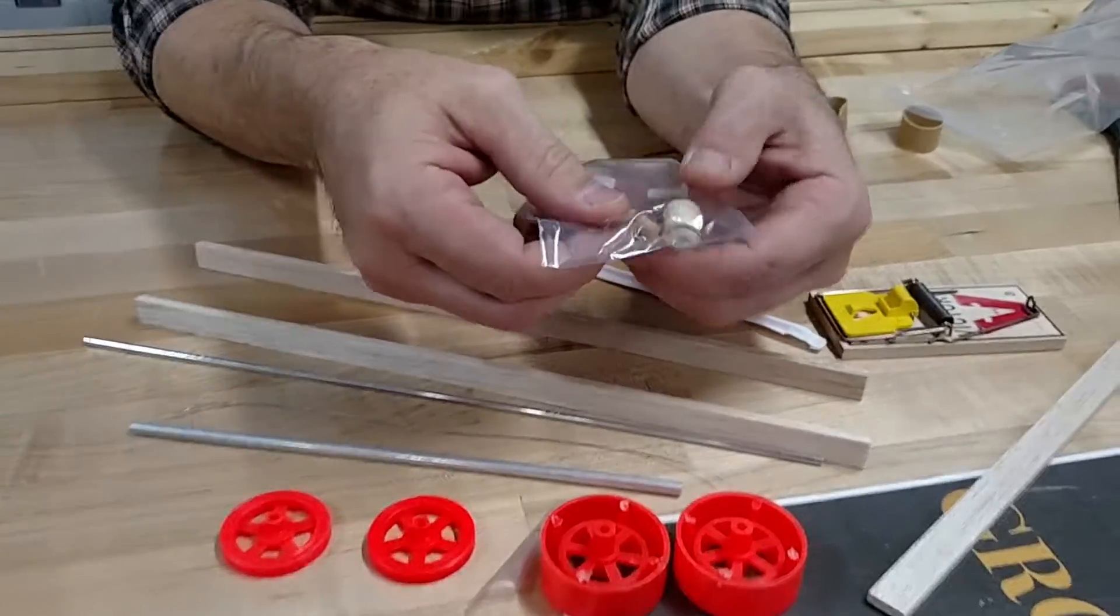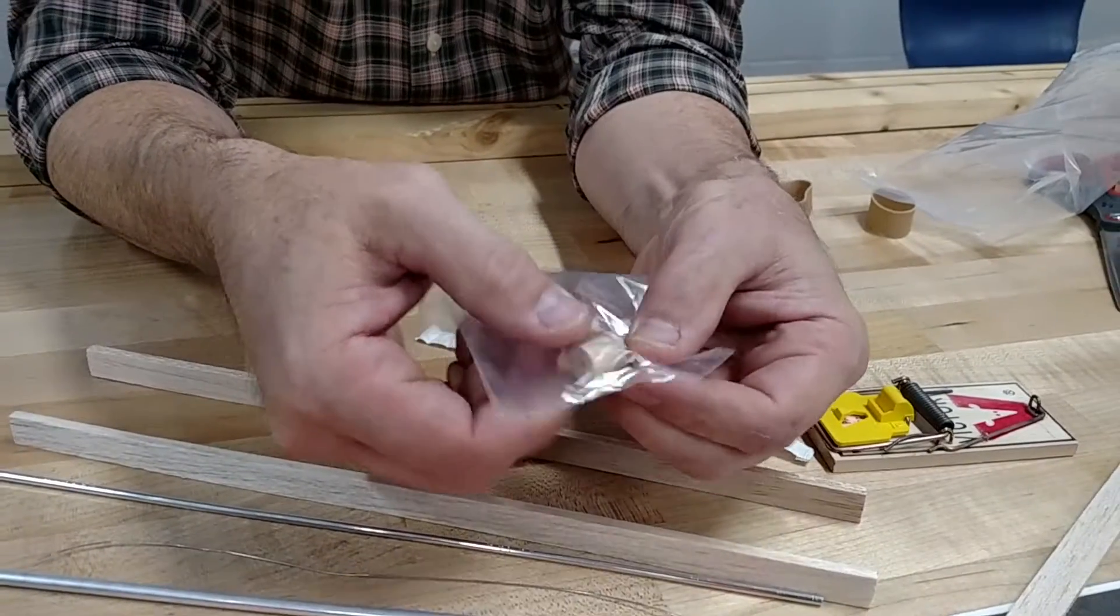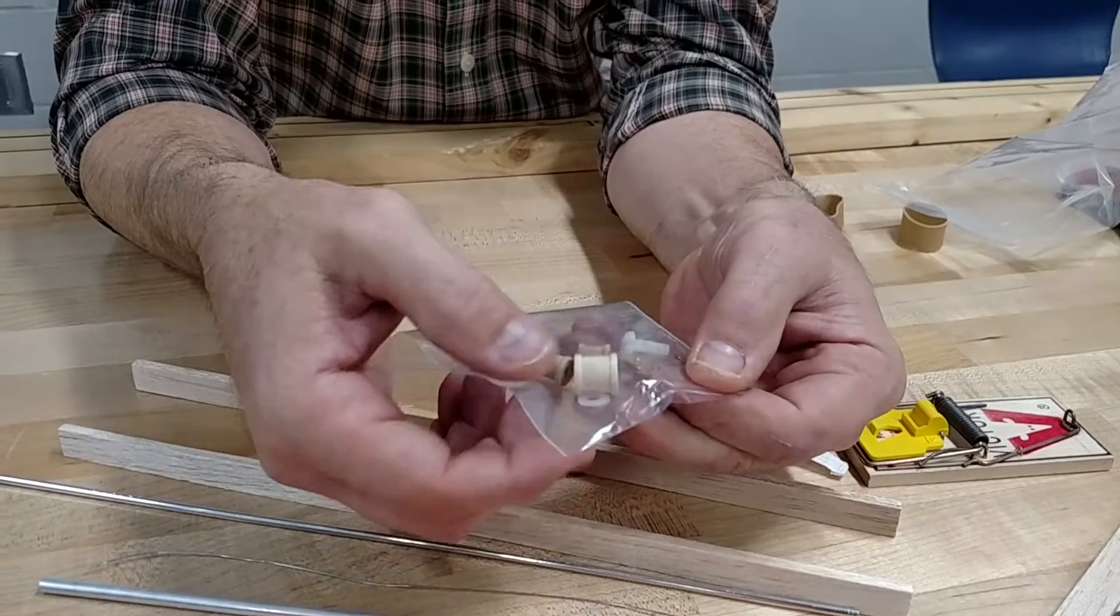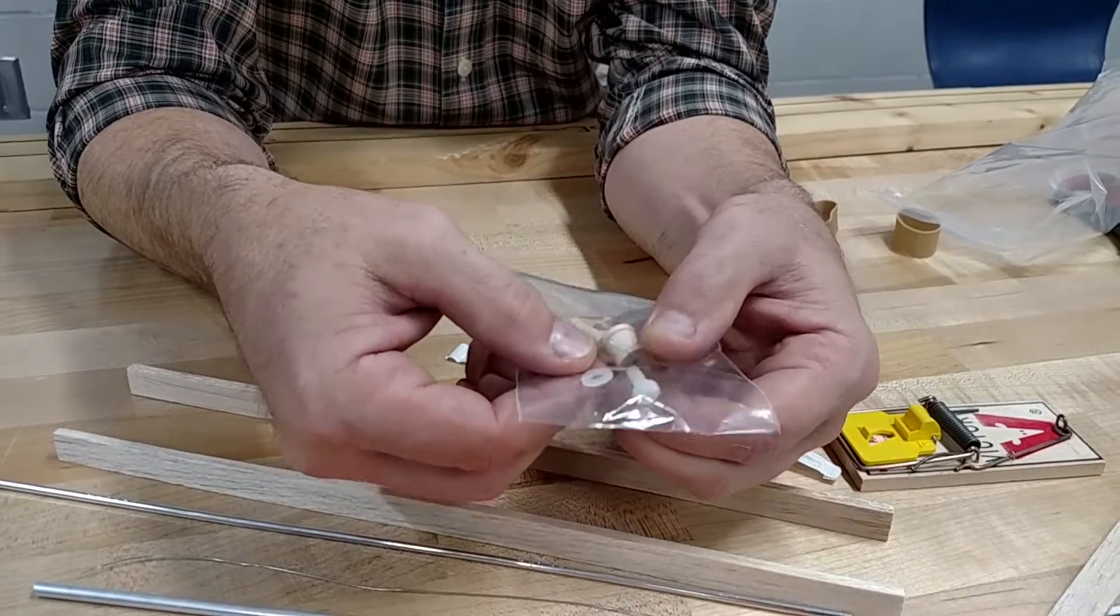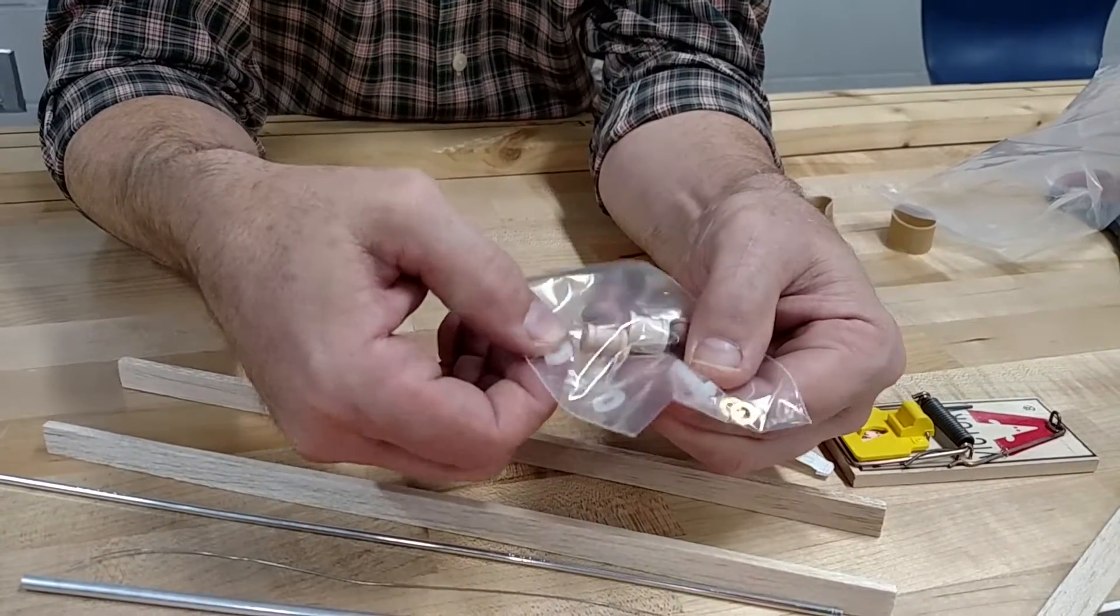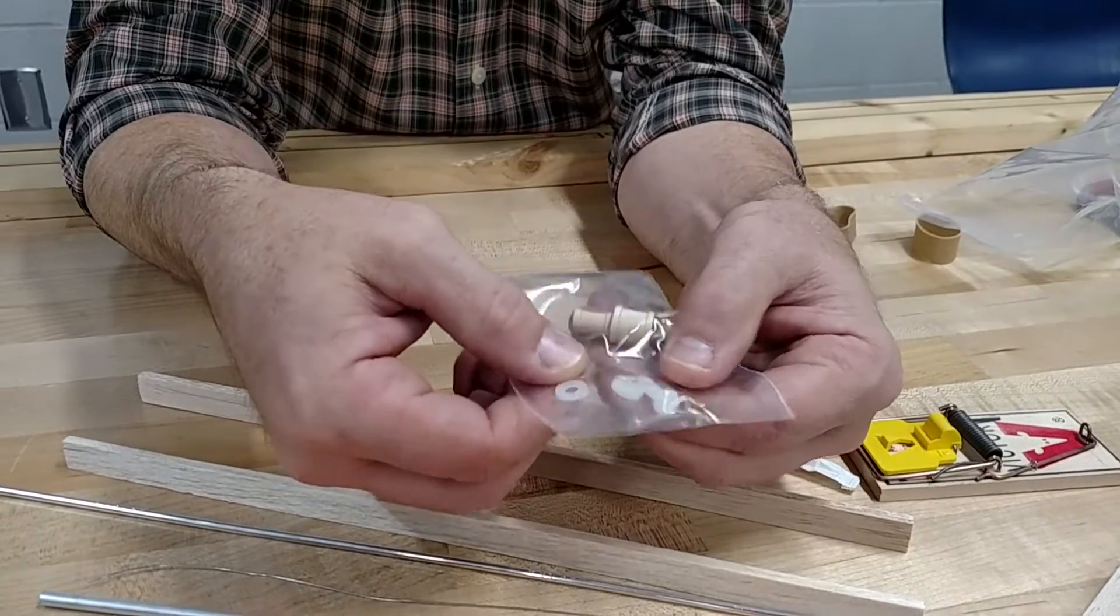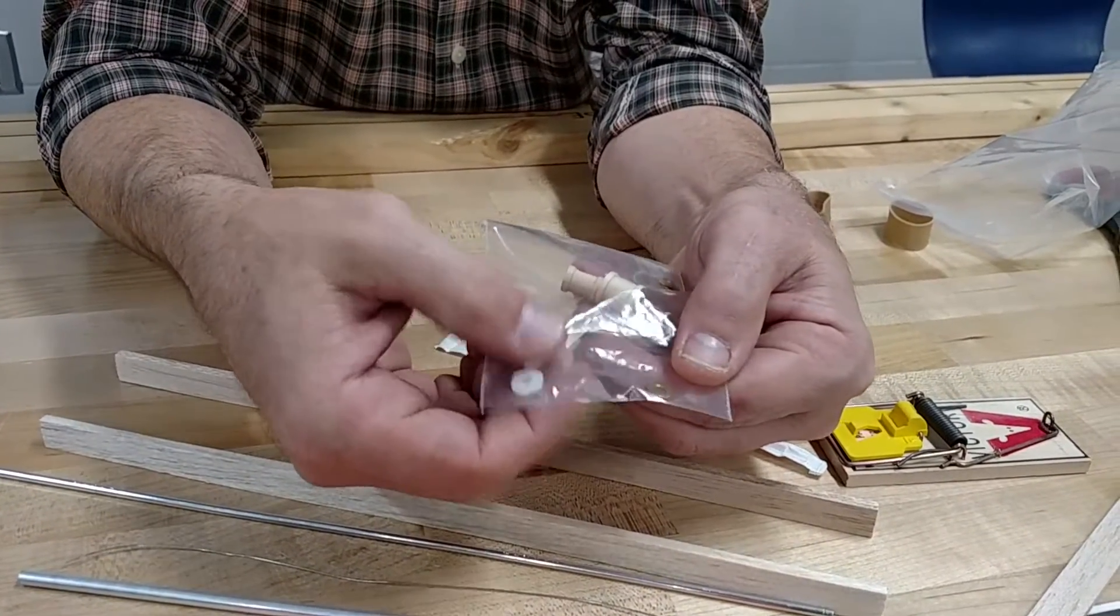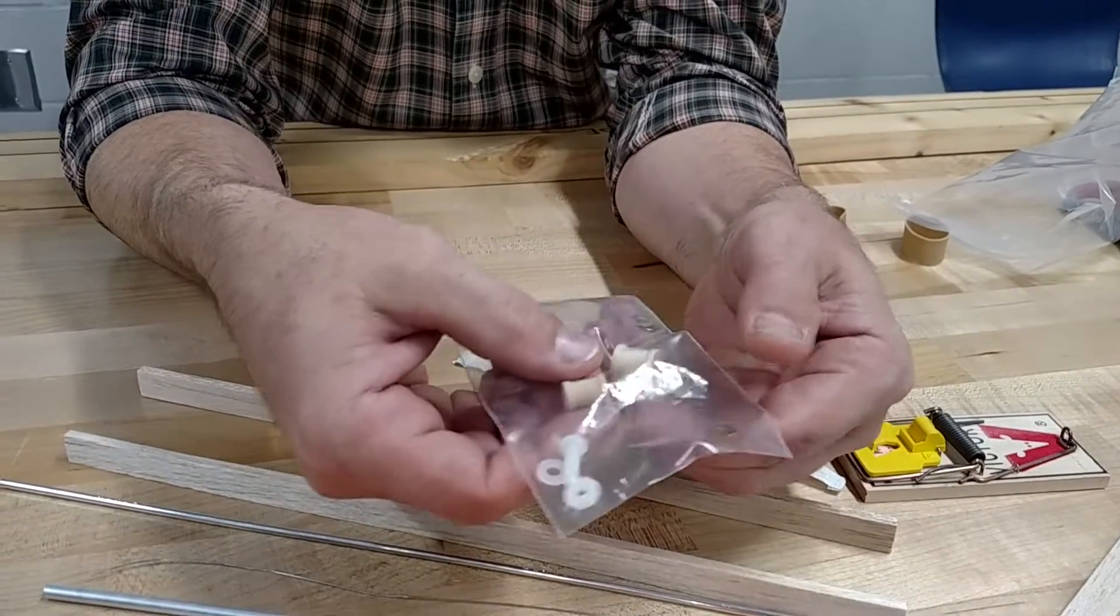You also have a few other parts. You have a couple of spools so you can change the diameter of your axle if you need to. You have this little plastic screw. This is for a modification that's in the instructions. So if you're going to do that, you'll see that in the instructions. Most people will not use that as a modification.